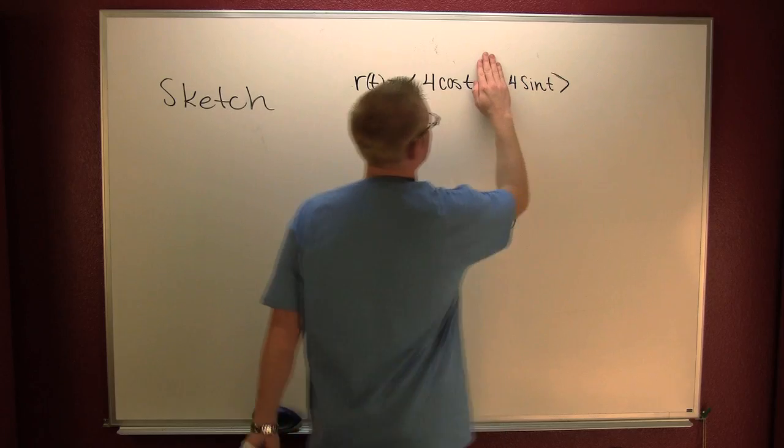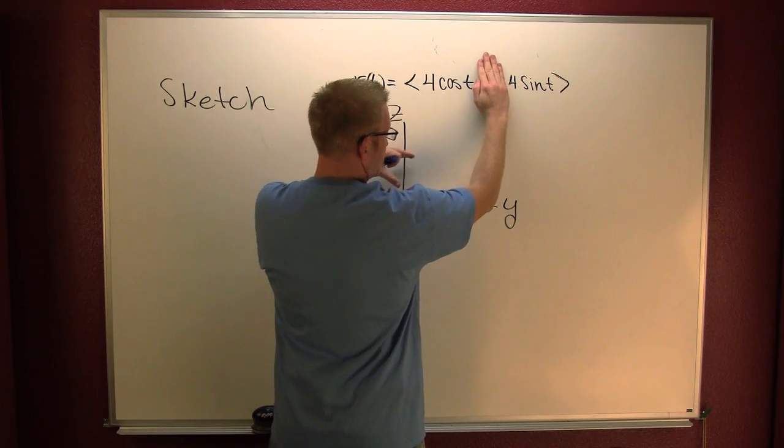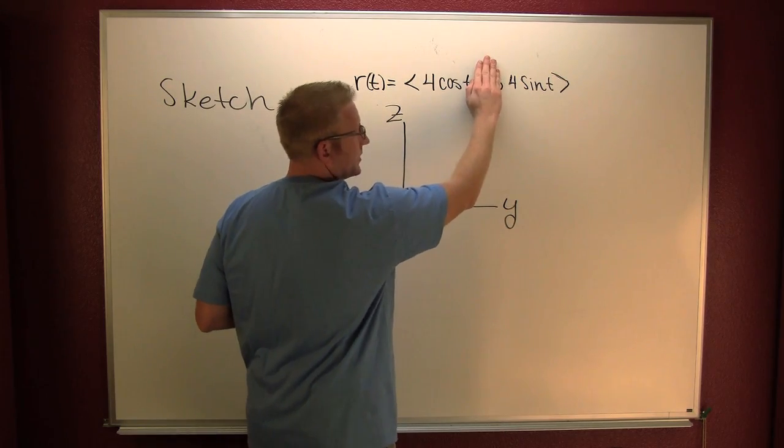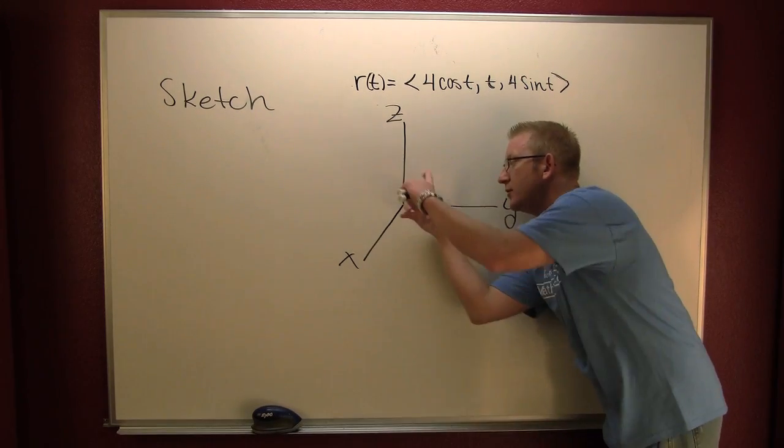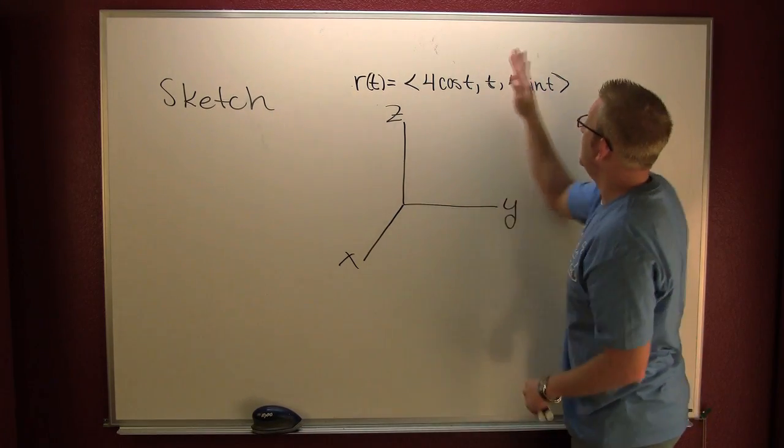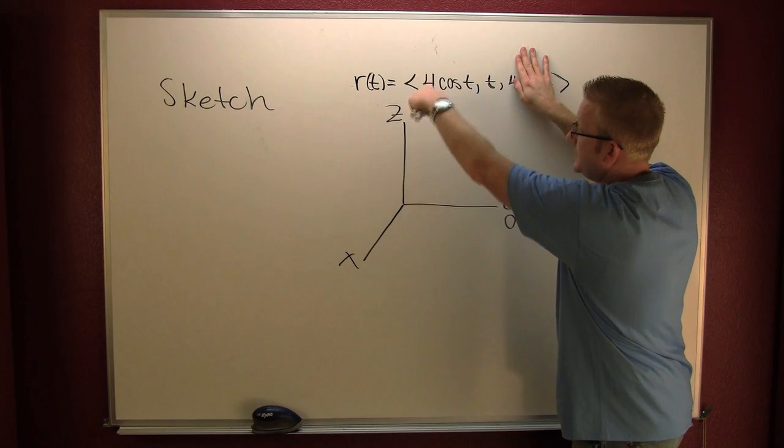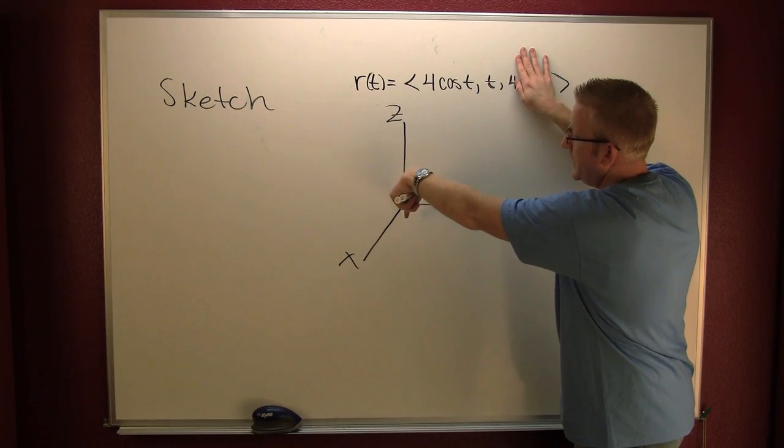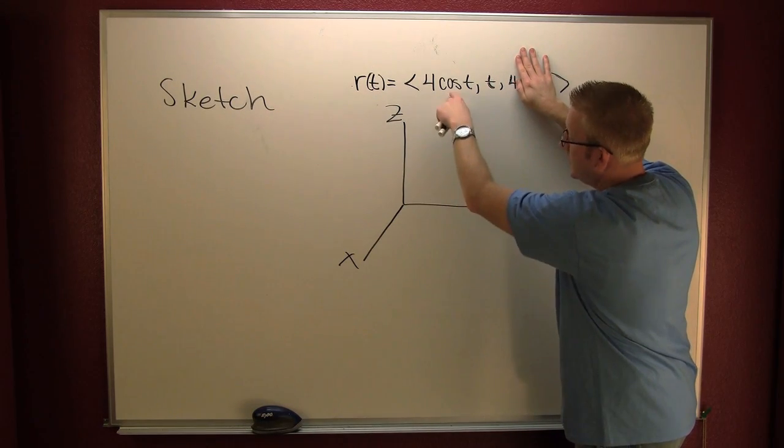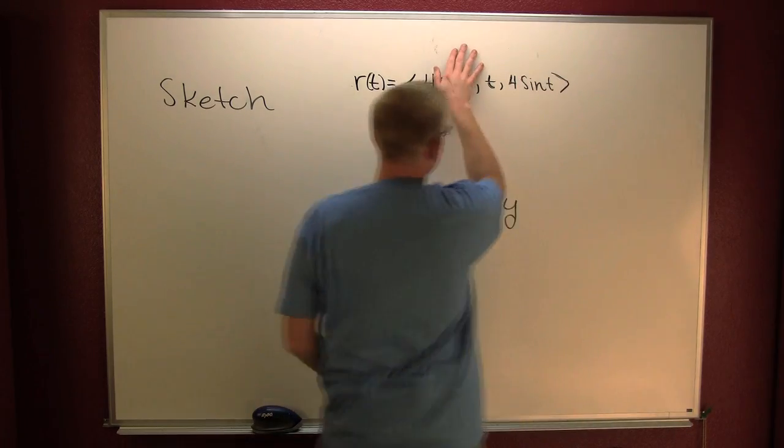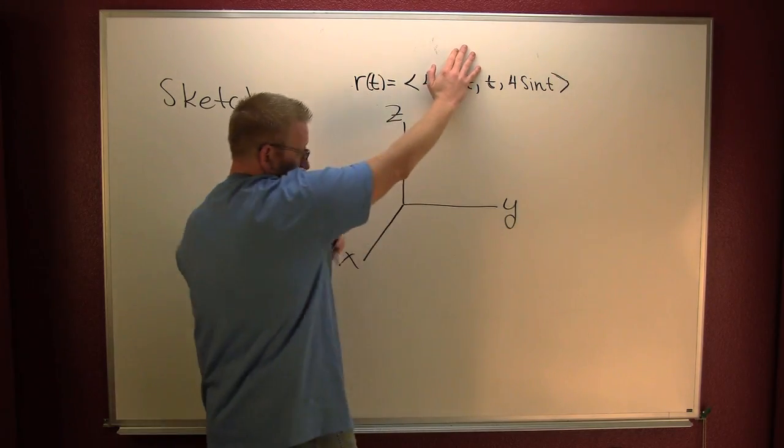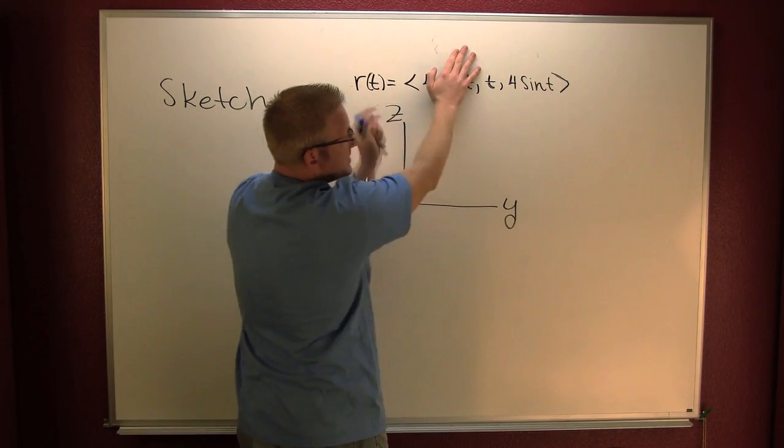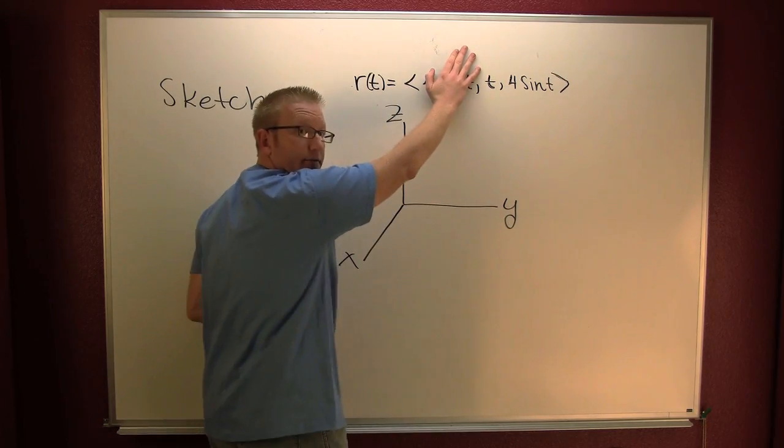In my xz plane, it's going to be a circle. So if we were standing down y and we were looking at xz, we're going to see a circle. Here if I was standing on z and I was looking down at the plane, I would see a cosine wave. And here if I was standing on x, or looking down x into the yz, we see a sine wave.